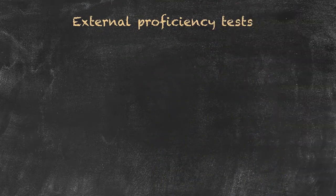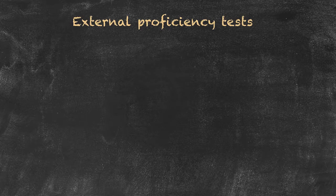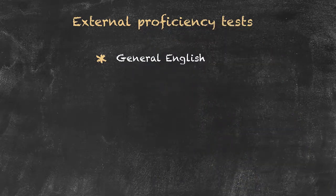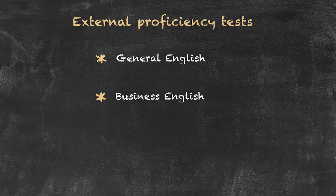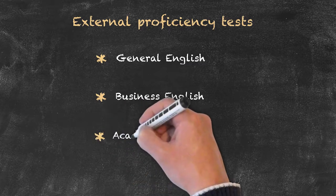Our next category is what are often called external proficiency tests. Within these types of tests there are three general categories and we can label those categories as general English tests, business tests or business English, and the final category academic.